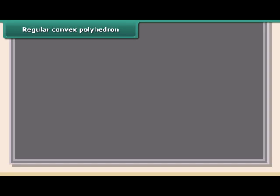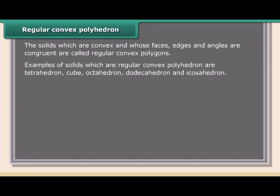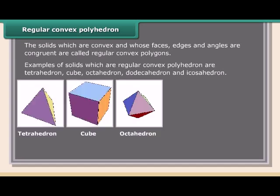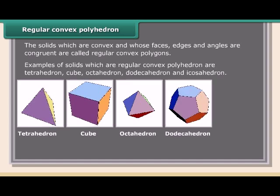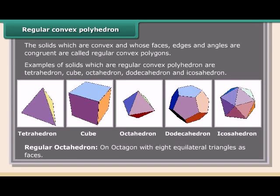Regular convex polyhedrons are solids which are convex and whose faces, edges, and angles are congruent. Examples include the tetrahedron, cube, octahedron, dodecahedron, and icosahedron. A regular octahedron has eight equilateral triangles as its faces.